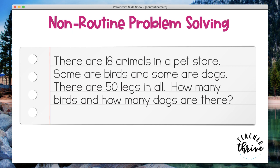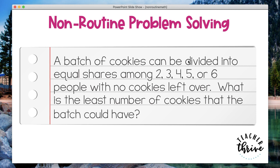Here is another example: a batch of cookies can be divided into equal shares among 2, 3, 4, 5, or 6 people with no cookies left over. What is the least number of cookies that the batch could have? This is really going to be talking about multiples and least common multiples, greatest common factors — but students don't have to know that terminology to figure out a way to solve this.